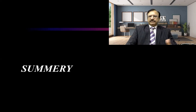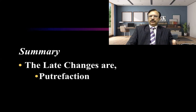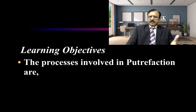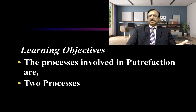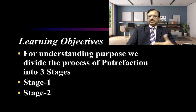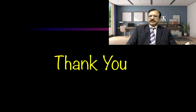So the summary of this lecture is that we have started discussion on the late changes after death — putrefaction, mummification, and adipocere formation. For putrefaction, we understood that two processes are involved: autolysis and bacterial action. For understanding purposes, we divided putrefaction into three stages: stage one, stage two, and stage three. Thank you very much. We will continue the topic in the next lecture. Take care.